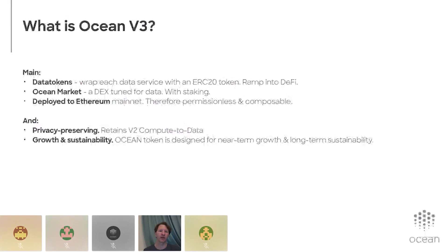So what is Ocean v3? The main things are: data tokens, which wrap each data service with an ERC20 token, giving it a big path and bridge into DeFi; Ocean Market, which is like a DEX — a decentralized exchange — tuned for data, with a big staking component; and deployment to Ethereum mainnet rather than our own PoA network, making it permissionless and really helping composability and usability. We're maintaining the privacy-preserving compute-to-data feature from v2, and we've put this into an overall system-level design for the Ocean token, designed for near-term growth and long-term sustainability.